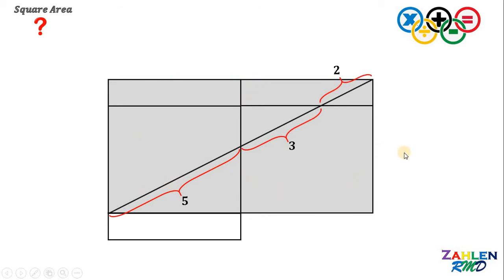At this point, we are now ready to find the area of the square. So let x be the side of the square. On the top, we have x plus x or simply 2x.